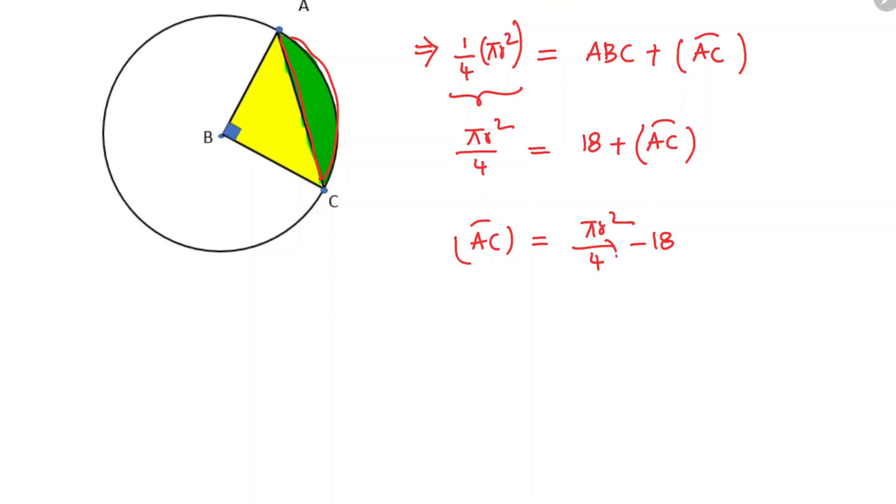To find r value we have a small hint from the question that BC is equal to r and AB is equal to r. So the area of triangle ABC will be equal to 1/2 into base into corresponding height where both are equal to r which is given as 18. That means r² is equal to 36 which gives r value as 6.